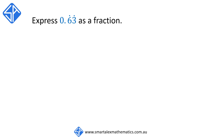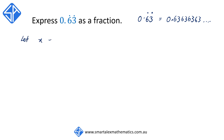Our next example we've got 0.63 repeated. 0.63 with the dots on top of the 6 and the 3 simply means that both these digits, 6 and 3, keep on repeating. Starting off the same way, we're going to let x equal to 0.63636363 and so on.